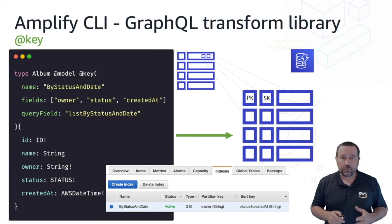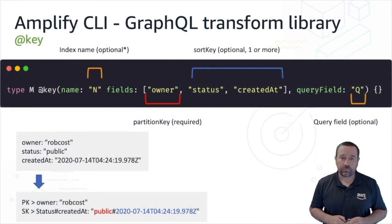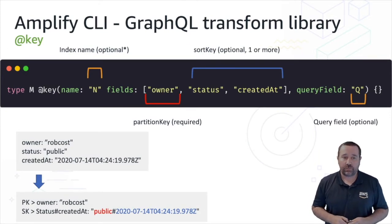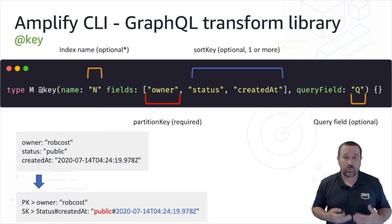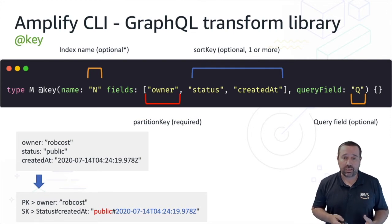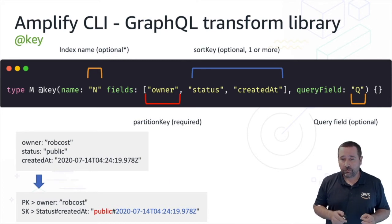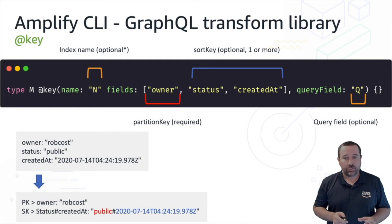In this example we're using a key directive. It has four different attributes. The first is the name — it's optional, but if we don't provide a name, we're telling Amplify we want to overwrite the default primary index for our DynamoDB table, so it's important to give it a name to ensure we're creating a global secondary index. The next attribute is fields, where we define the set of fields to include in our global secondary index. The first field becomes the partition key and the second becomes the sort key. Finally, we have the query field, which lets us define the name of the GraphQL query we'll run from our client to query this index.